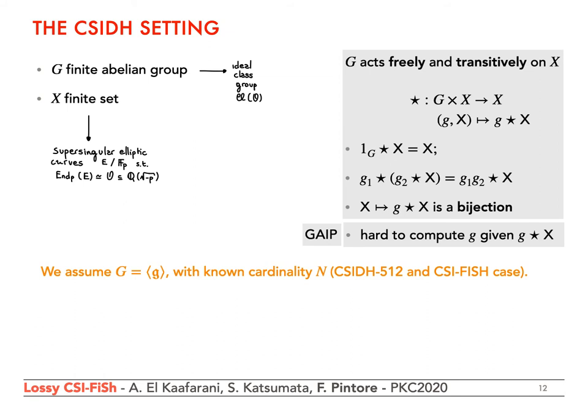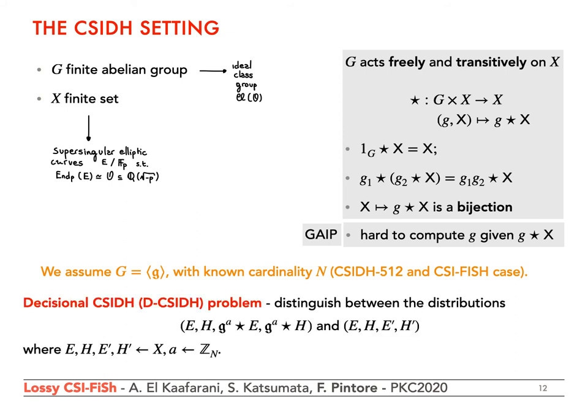We restrict to the case where the structure of G is known and it is cyclic of order N with G as a generator. This is the case for the group G obtained from the CSide 512 parameters, hence the case of SeaFish. We named our hard problem Decisional CSide (DC-side). The problem consists in distinguishing between two distributions: the first has two uniformly random curves E and H, and then G^a * E and G^a * H where a is uniformly random in Z_N; the second distribution is composed of four uniformly random curves.